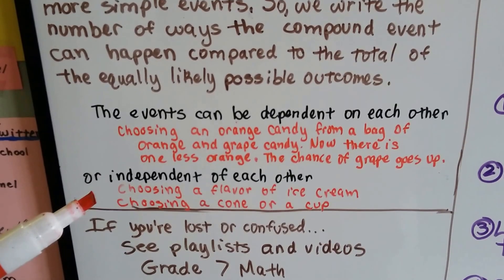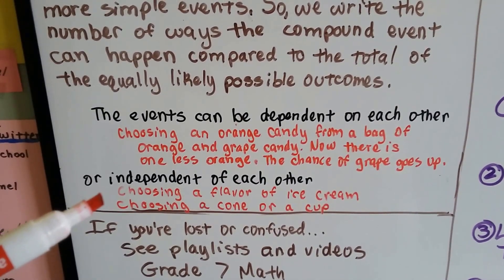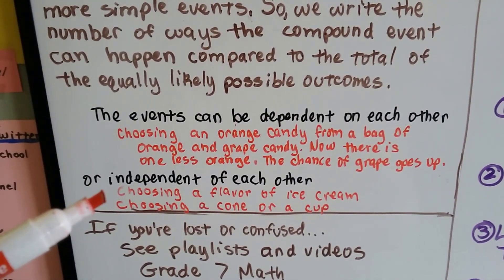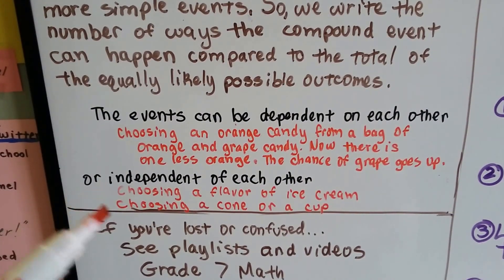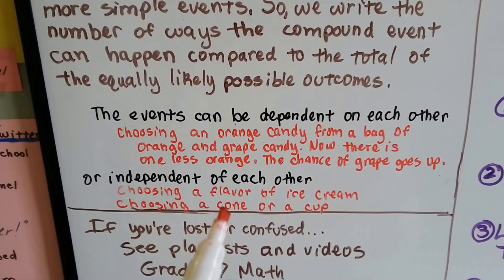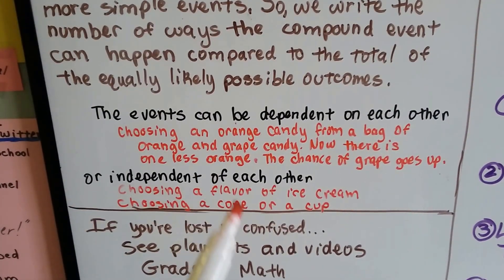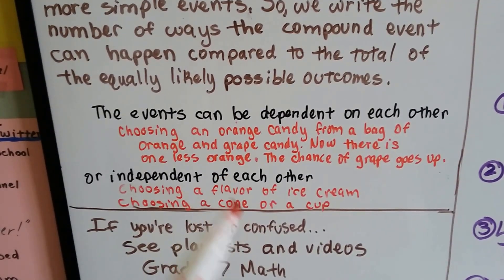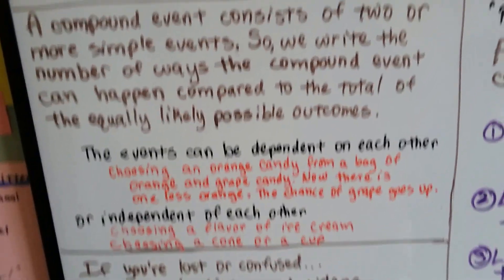An independent outcome would be choosing a flavor of ice cream — like chocolate, strawberry, or vanilla — and then choosing if you want it in a cone or a cup. They have nothing to do with each other. These choices are completely independent of each other.